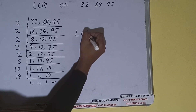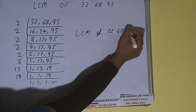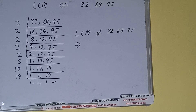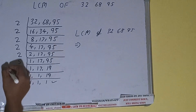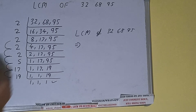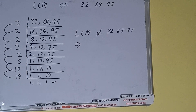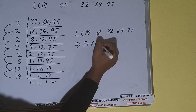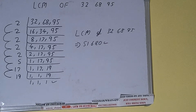Now we do the last step: the LCM of 32, 68, and 95 equals the product of all the numbers on the left-hand side. It's quite large so you can use a calculator. 19 × 17 = 323, × 5 = 1615, × 2 = 3230, × 2 = 6460, × 2 = 12920, × 2 = 25840, × 2 = 51680. That is the answer. This is all about the LCM of 32, 68, and 95. If you found the video helpful, please click the like button, consider subscribing, and thanks for watching.